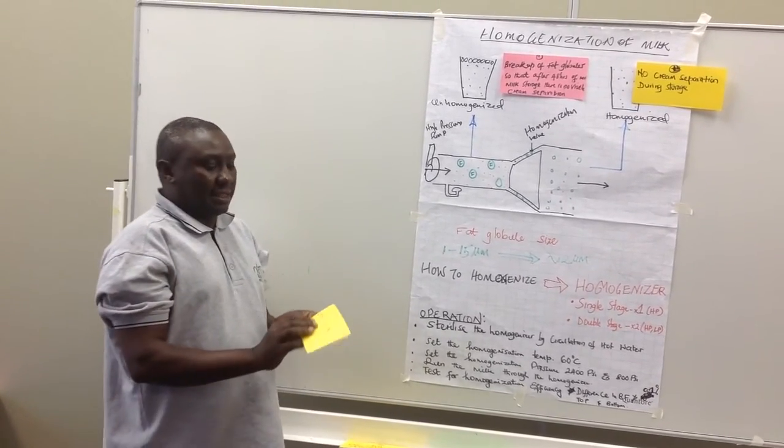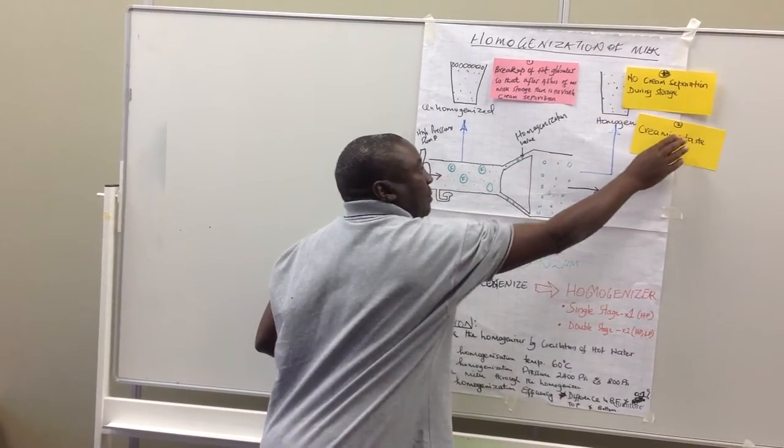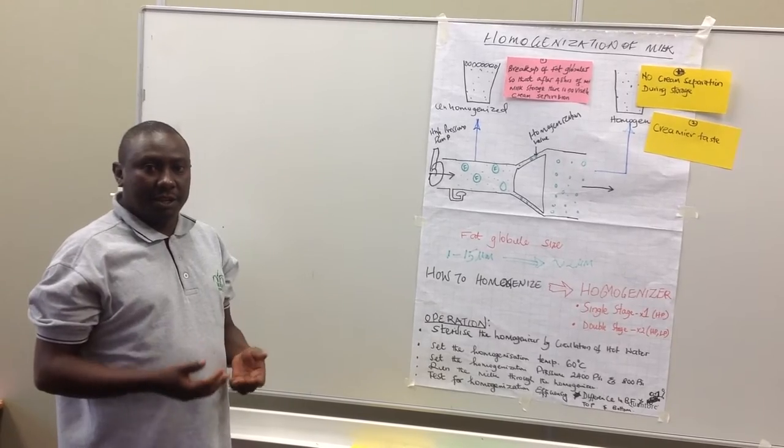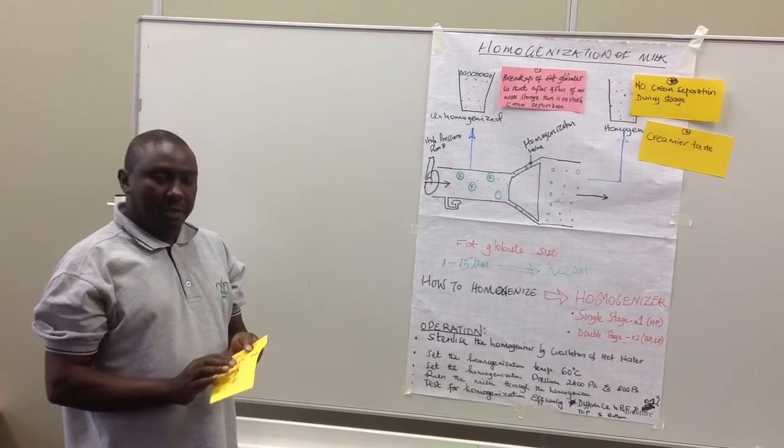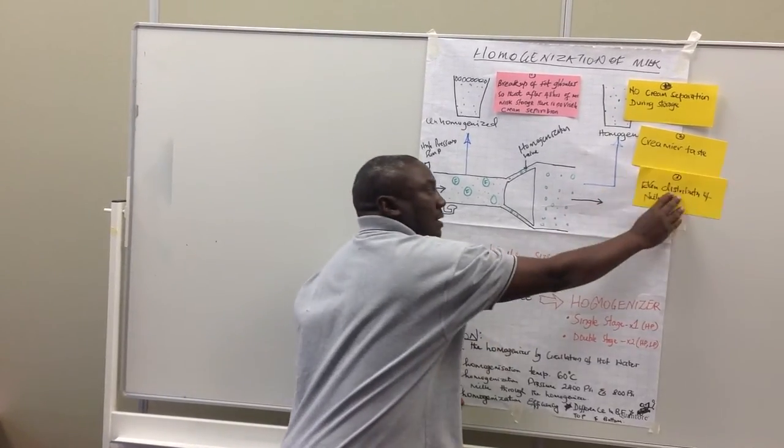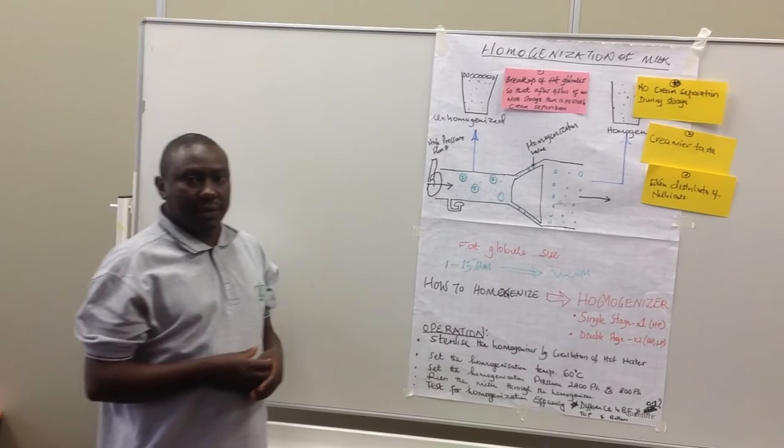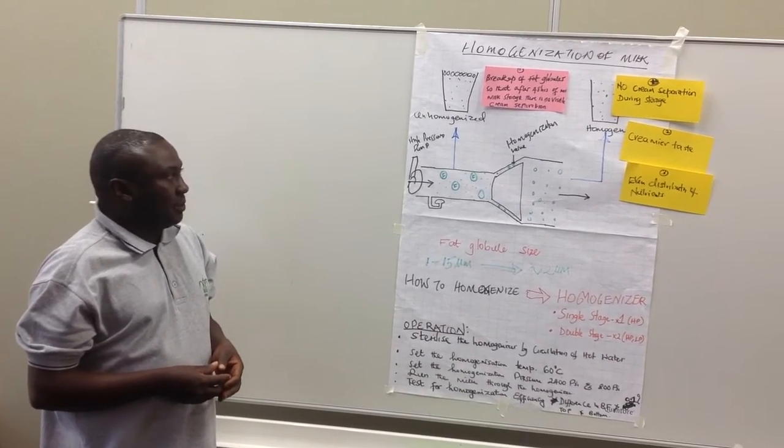The other reason is that the milk is creamier in taste. Homogenized milk has a rich cream flavor. The last reason is that milk fat is evenly distributed, and therefore the nutrients associated with milk fat, such as fat-soluble vitamins, are also well distributed.